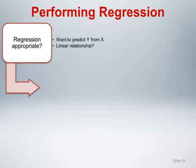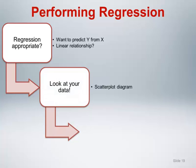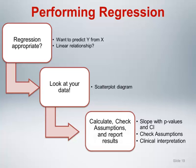When performing regression, you should first consider whether or not regression is appropriate, meaning that there is interest in predicting Y from X and that there is a plausible linear relationship between X and Y. Next, be sure to look at your data by examining a scatterplot diagram. Lastly, calculate the regression results, check the necessary assumptions, and report your results.